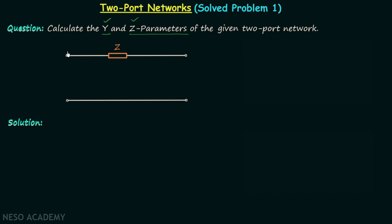This is port number one, or the input port. Let's say the input voltage is v1 and the input current is i1. This is port number two, or the output port. Let's say the output voltage is v2 and the output current is i2.